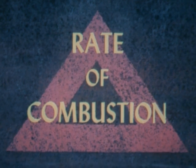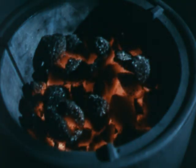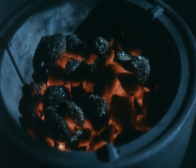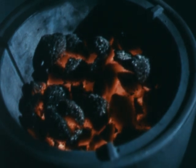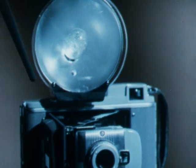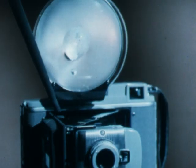Combustion may take place at different rates. A charcoal fire represents a slow rate of combustion. When metal wire burns in oxygen within a flash bulb, rapid combustion takes place.